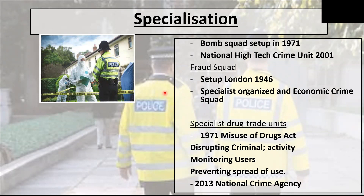The drug units were set up to disrupt criminal activities and organisations, monitor known drug users, and prevent further spread and use of drugs. In 2013 the National Crime Agency started tackling drug trafficking in and out of the UK and large-scale drug production within the UK, using intelligence and data on known criminals. Nowadays all local police forces have special squads to help deal with drug dealers in their areas.